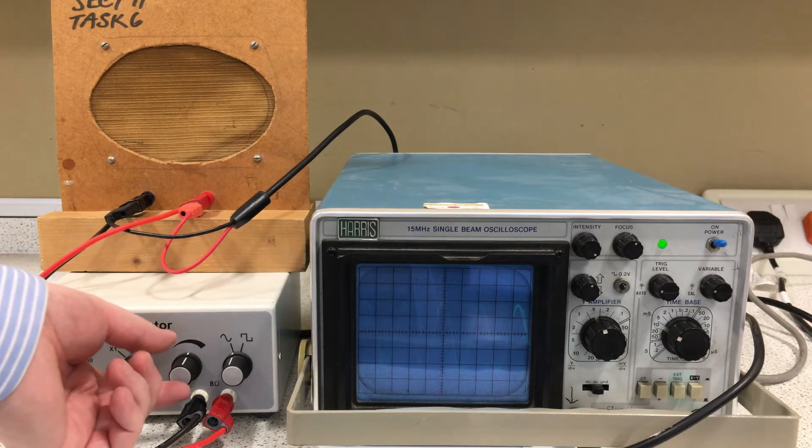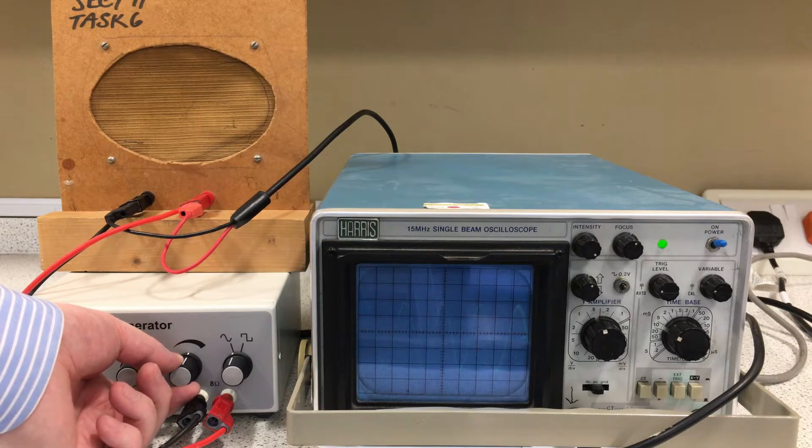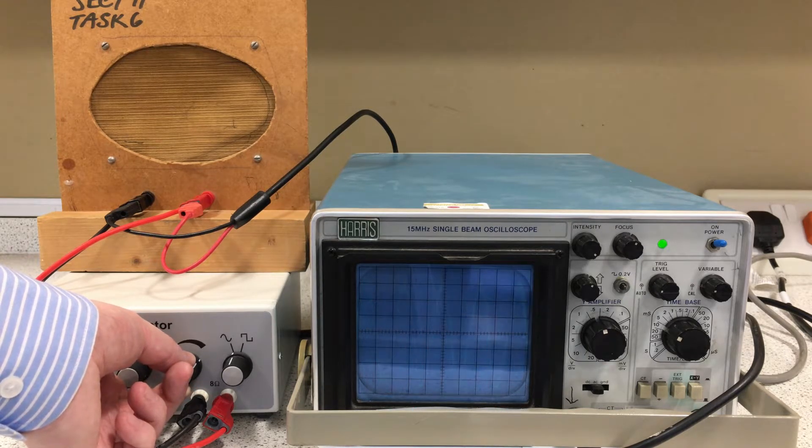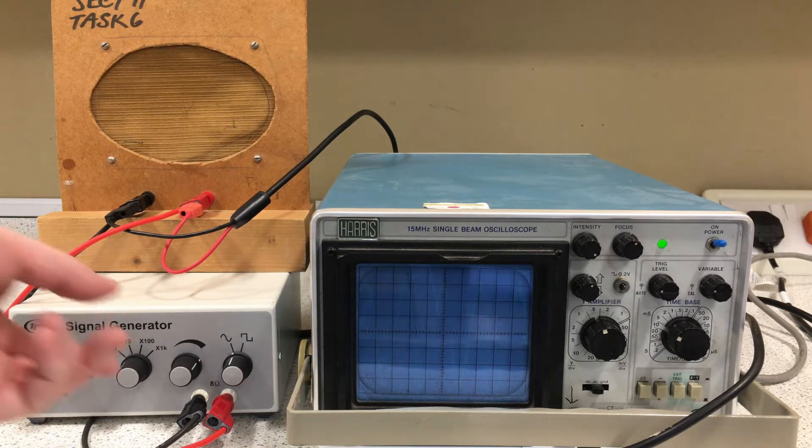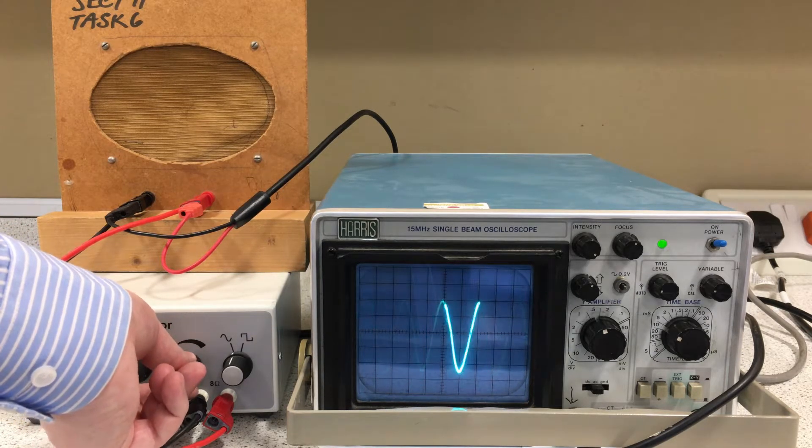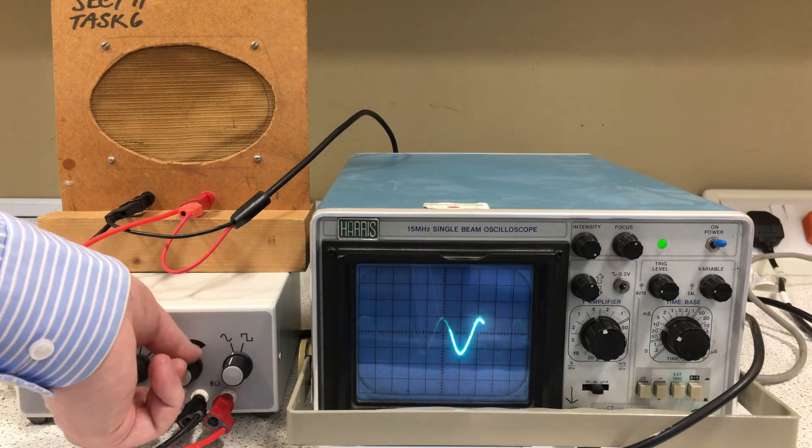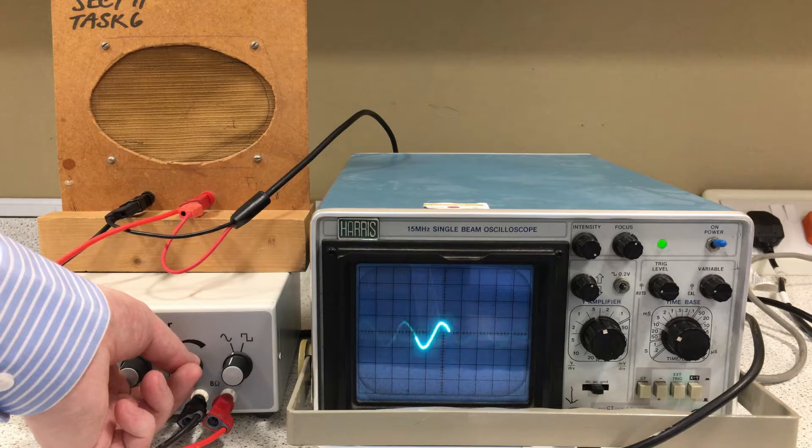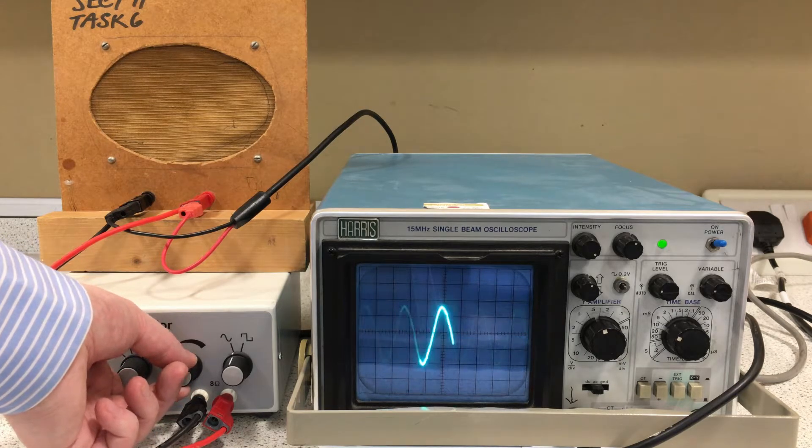I'm also able to adjust the signal to produce a taller wave on the oscilloscope and a louder sound from the speaker. Notice that adjusting the volume or amplitude here does not affect the frequency of the waves. It just stretches them in the Y direction.